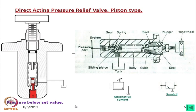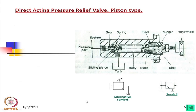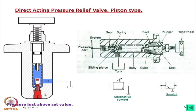Now, looking at this coloured figure: when pressure is below the set value, this is the piston type, and there is another orifice placed here. When there is a rise in pressure, it will open and oil will flow through and go to the tank.